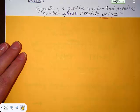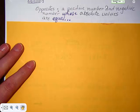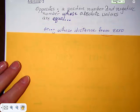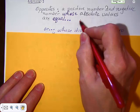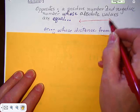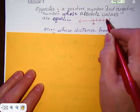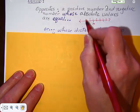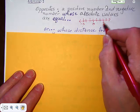There are a couple of things you need to understand. When I talk about opposites, I mean a positive number and a negative number whose absolute values are equal. For instance, if I put a negative 3 and a 3 on a number line, and I talk about their absolute value, I'm talking about the distance from 0. So this is negative 3 and this is 3.